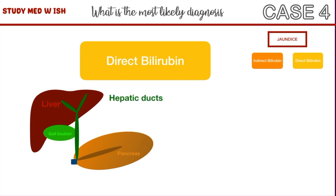These are the hepatic ducts. This is the cystic duct. This is the pancreatic duct, and they come together to form the common bile duct. As we saw earlier, direct bilirubin is formed in the liver, so it travels from there and goes into the gallbladder.